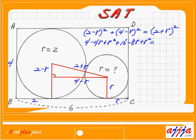The right-hand side is (2 plus R) squared. Expanding: 4 plus 4R plus R squared. Now I've got the left-hand side and right-hand side expanded. I can see the 4 and 4 cancel, and the R squared terms also cancel on both sides.